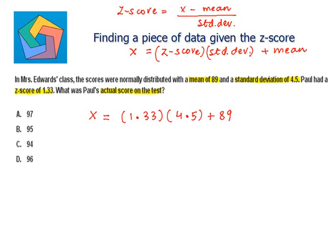which is equal to 1.33 times 4.5 is 5.985 plus 89, which is equal to 94.985, which can be approximated to 95, which is the answer.